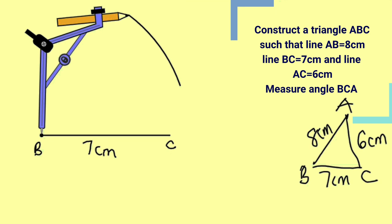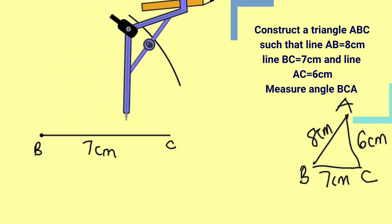Like this, take away the compass, now again bring out your ruler, measure 6cm, that is the length of AC.